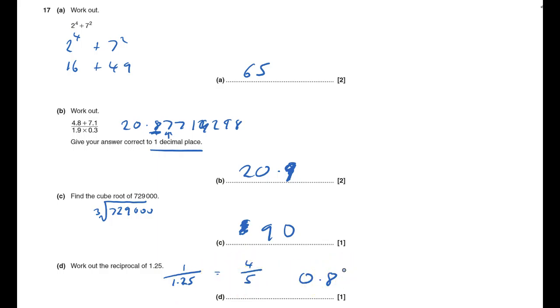Reciprocal means put 1 over or flip it. And actually that's 1 and a quarter, and 1 and a quarter is 5 quarters. And if you flip 5 quarters, you get 4 fifths. So actually you could have done this one even in a non-calculator paper. Would have been quite easy, but in a calculator paper, it's done.